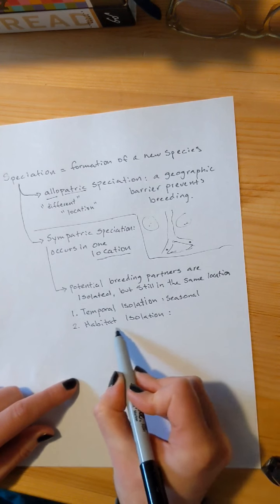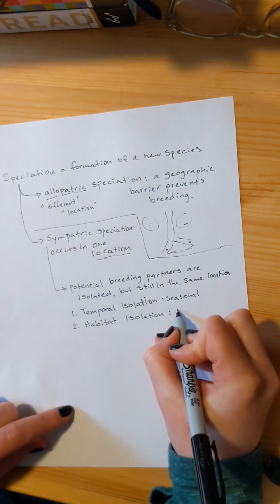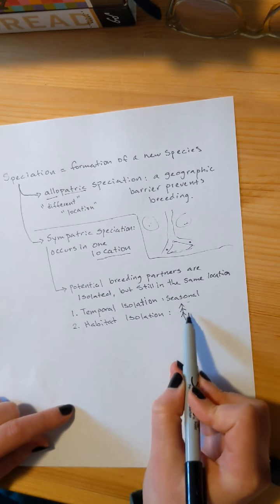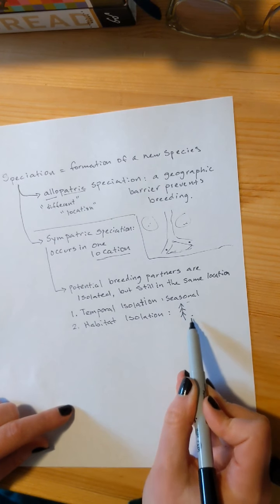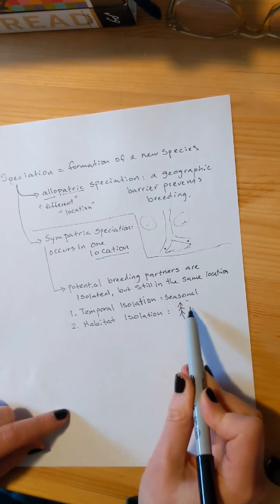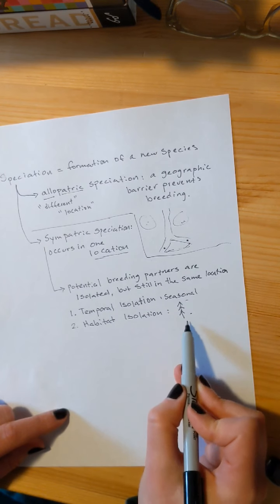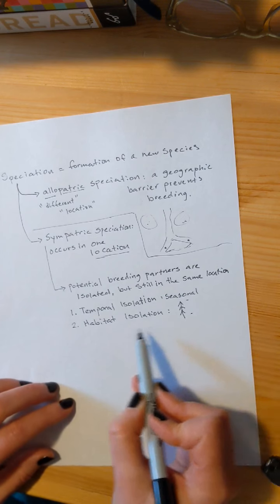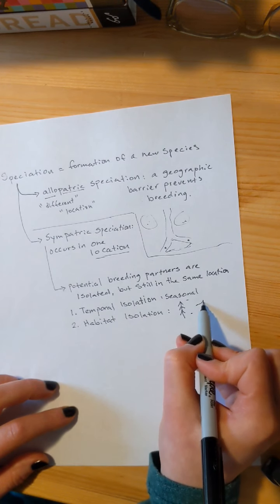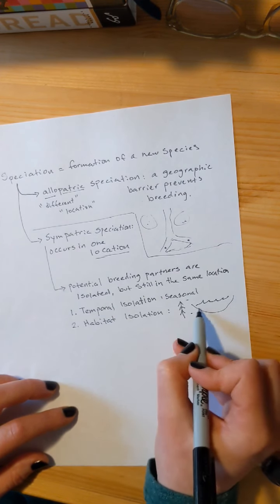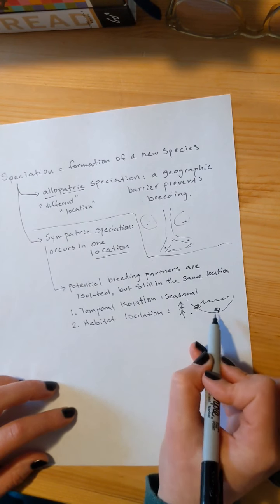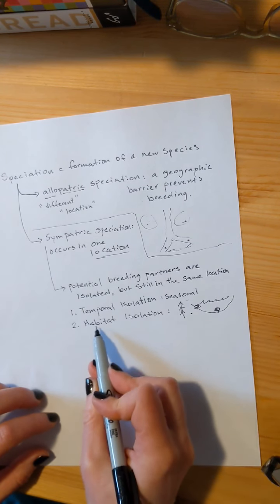Then you have ecological or habitat isolation. That's kind of what it sounds like. If there was a tree, and one bird lived in the top, and one bird lived in the bottom, and they spend their entire life in the top or the bottom, they will not reproduce together because they will not interact. They're still in one place, they're still in one tree, and they still might have a reproductive season at the same time, but their habitat keeps them separate. Another example would be if I'm in a lake, one fish stays near the shore, and another fish stays near the bottom. These two are not going to interact, and thus they're not going to be able to reproduce together. They are isolated based on their habitats.